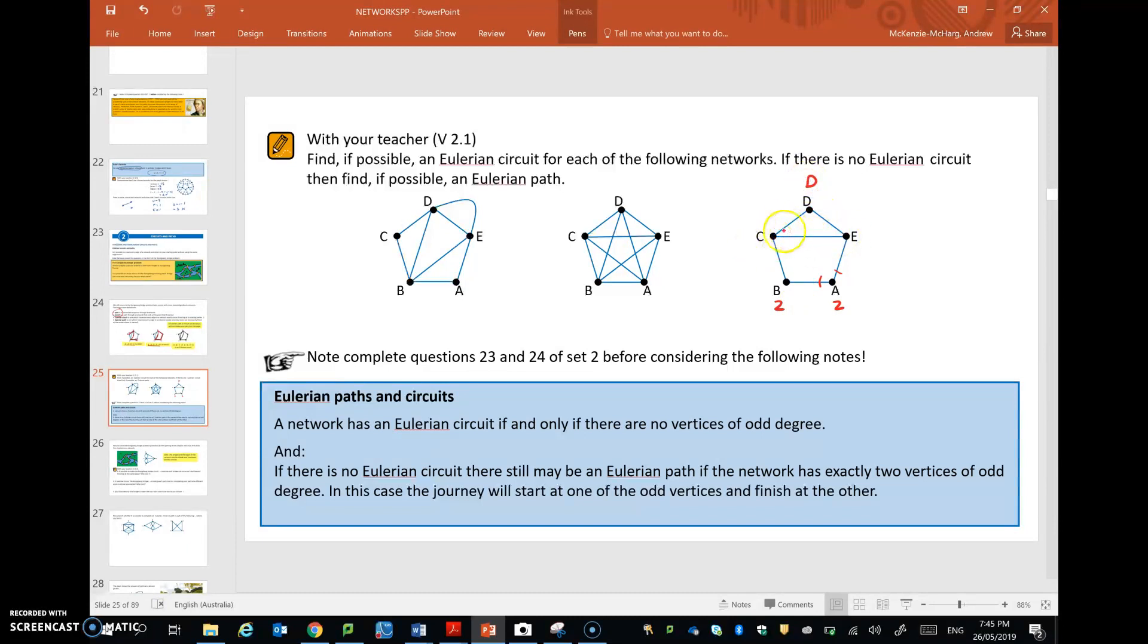But vertices C has a degree of 3, because there are three edges leading to it, and same with E. So there are vertices of odd degree there, therefore no Eulerian circuit is possible.